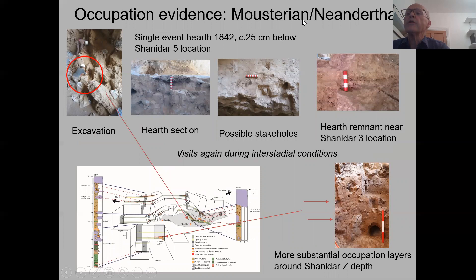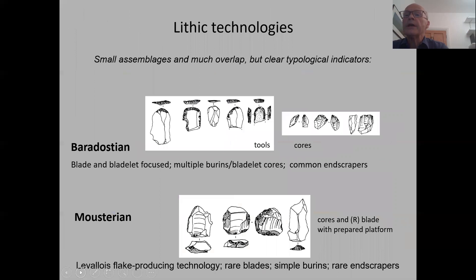The Mousterian Neanderthal occupation evidence underneath Shanidar 5 is very similar. Here is a good example — a single-event hearth about 25 centimetres below the Shanidar 5 location. This is the section through it, with what we think are stake holes around it. Another section shows a remnant hearth near the Shanidar 3 location. Further down, the occupation levels at the levels of the lower Neanderthals — Shanidar 4 and others — do appear to be more substantial.